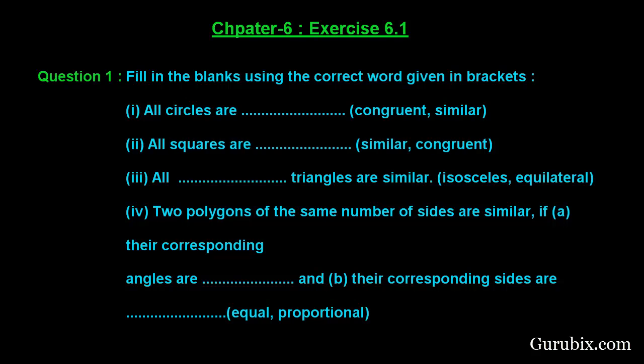We have 4 parts of this question. In part 1, we are asked all circles are congruent or similar. All circles are congruent is not possible because the radii of circles can be different. So if the radii is different, then the circles may be smaller or bigger. But all the circles are similar, it is true because the shape of all circles is same. So we shall write here, all circles are similar.